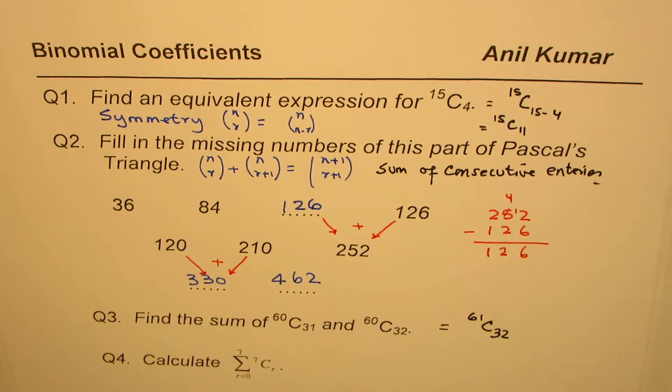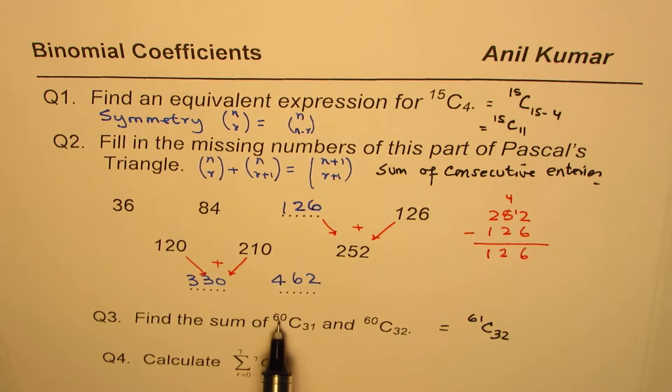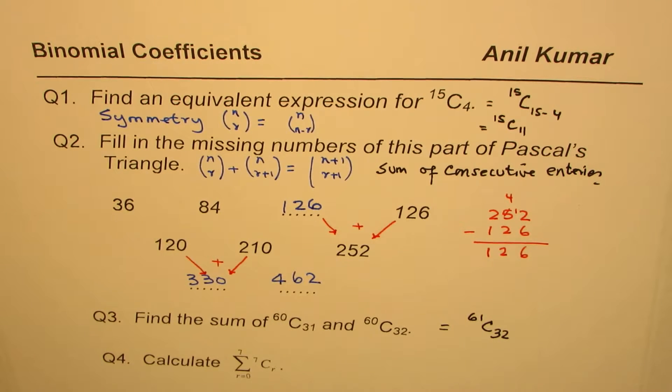So that is how we can find the sum of two consecutive entries in Pascal's triangle. That is the 60th row, which gives you the 31st column. The sum of 60th row 31st column and 32nd column entries will give you the number in the 61st row, 32nd column.